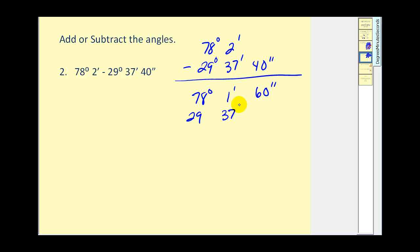Now we can perform subtraction using the seconds. Notice how we don't have enough minutes to subtract 37. So we're going to borrow 1 degree and convert that to 60 minutes. So we'll have 77 degrees, 61 minutes, 60 seconds. And now we can perform the subtraction.